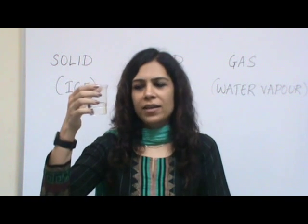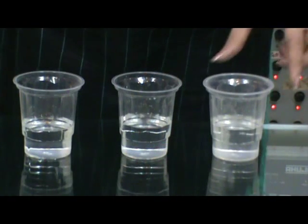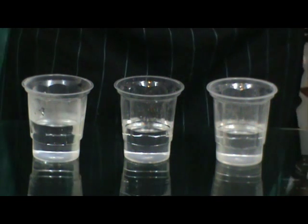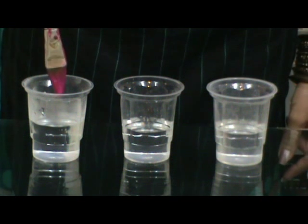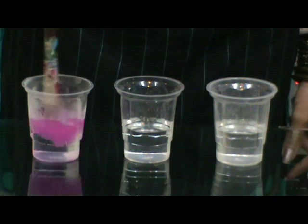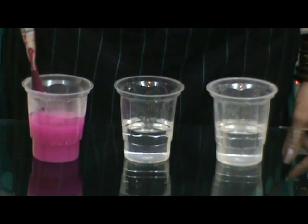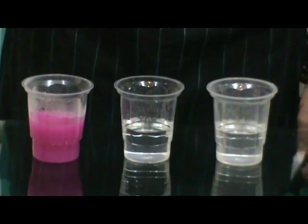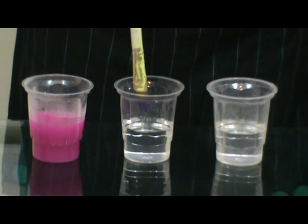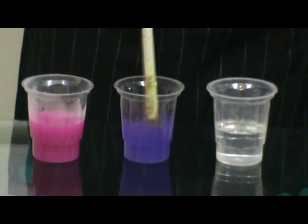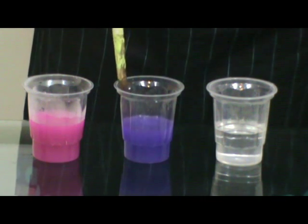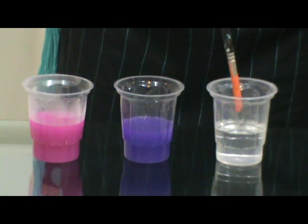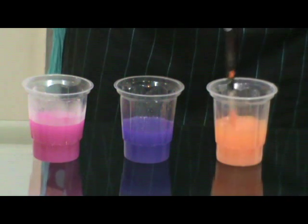Now, I'm going to show you what happens when we add some color to water. I have three glasses with a little water in each. We can see that water has no color. What happens when I add pink color to this first glass? Did you see that the water became pink? Now let me take purple color and add it to the second glass. Did you see? The water has become purple. Now let me take orange color and use it for the third glass — and now this has become orange.